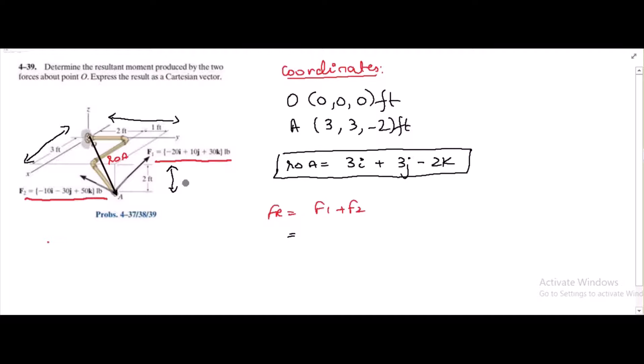So F1 is negative 20i plus 10j plus 30k plus negative 10i minus 30j plus 50k.